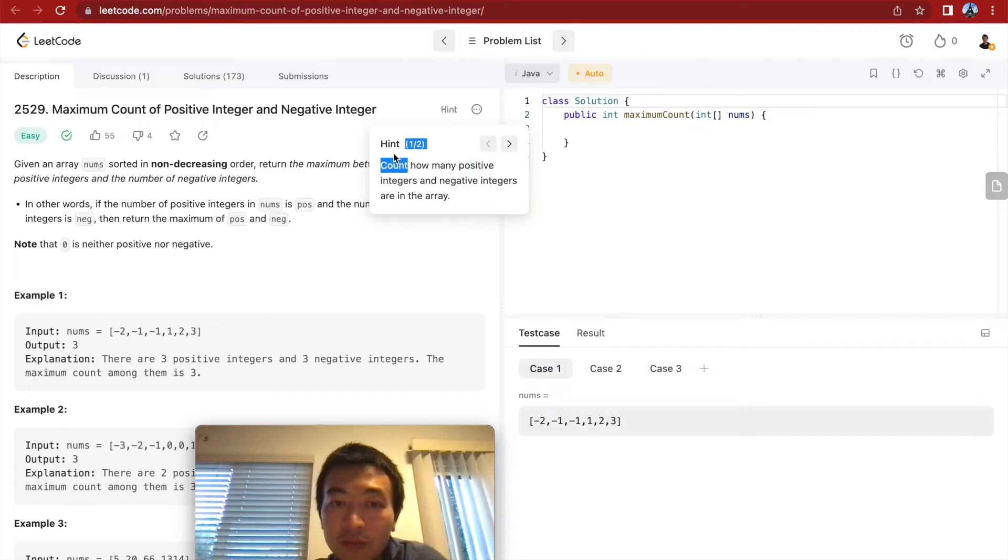Let's see if the hint says the same. Yeah, count how many positive integers, and then negative integers are in the array. Then, do take the max out of the two. Or, the other hint, the second hint is, since the array is sorted, can we use binary search? Yes, for sure.